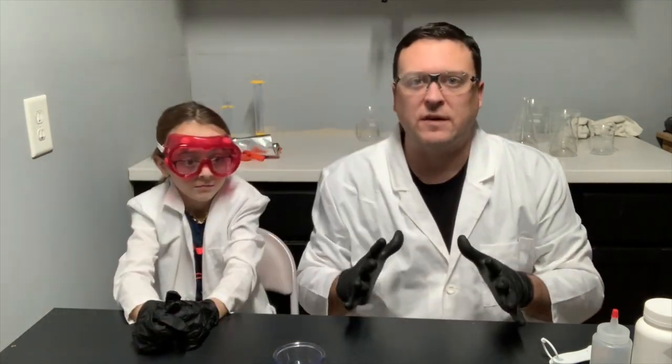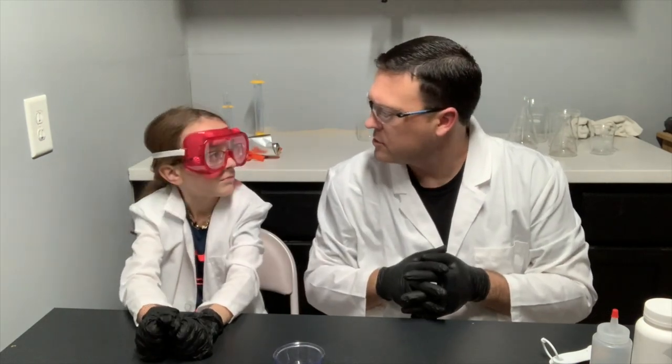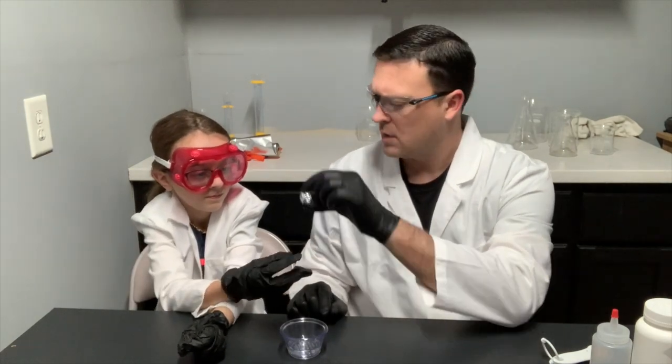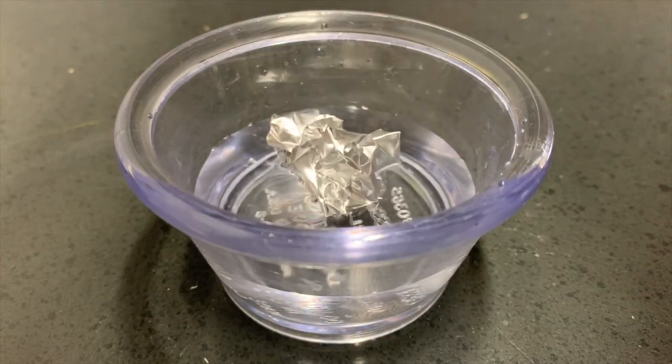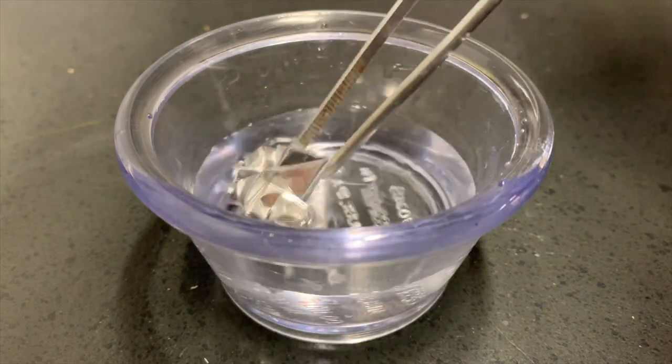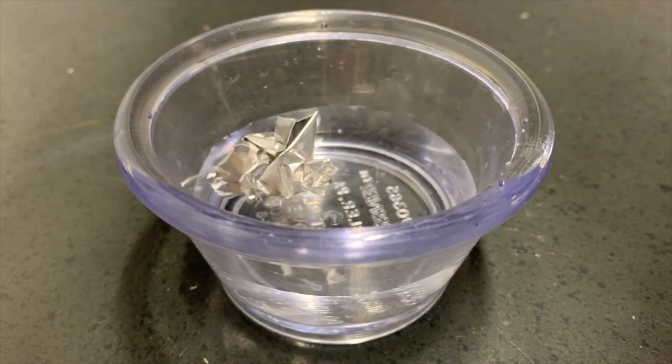To demonstrate the experiment that we're going to be doing today, we've got a little small experiment that we're going to do first. We've got a cup of DI water, and we've got a little ball of aluminum foil. So Charlotte, if you put that aluminum in the water, let's see what happens. Nothing. Can you push it down a little bit? Is anything happening? No.